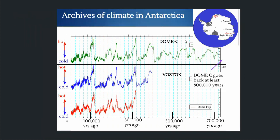We have different ice cores shown at different places. You have Dome C here in red, Vostok a bit further north, and Dome Fuji. They all show the same trends — the same variations in time. Meaning that what we are observing at those cores is something regional; it's not happening at only one place.